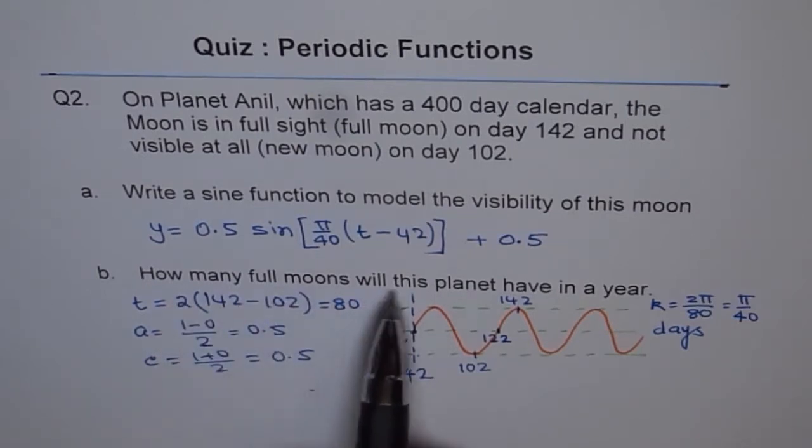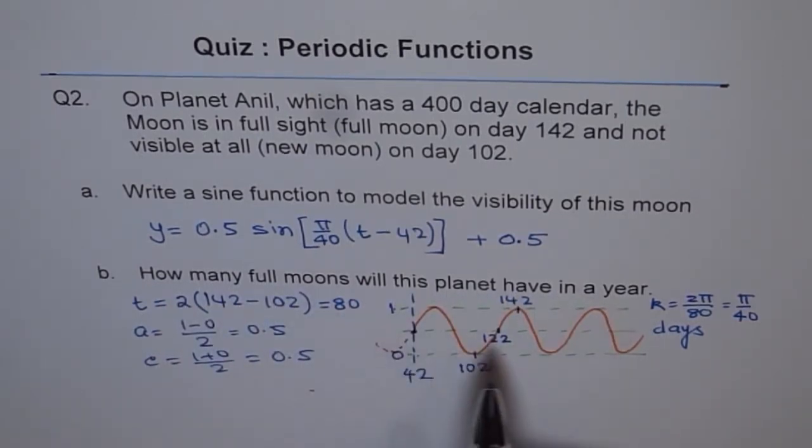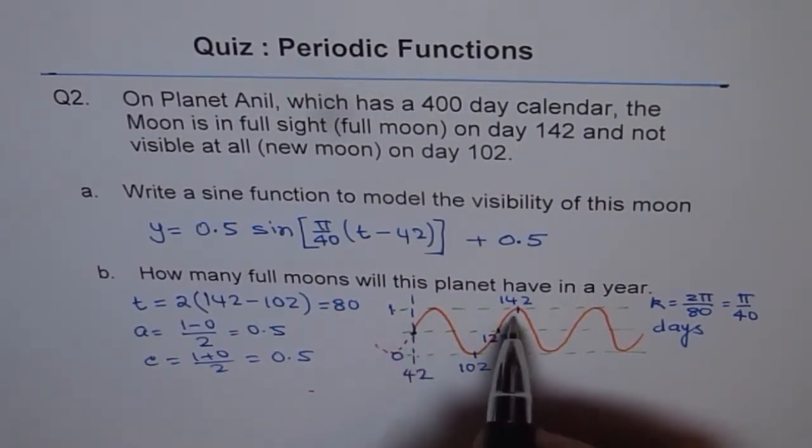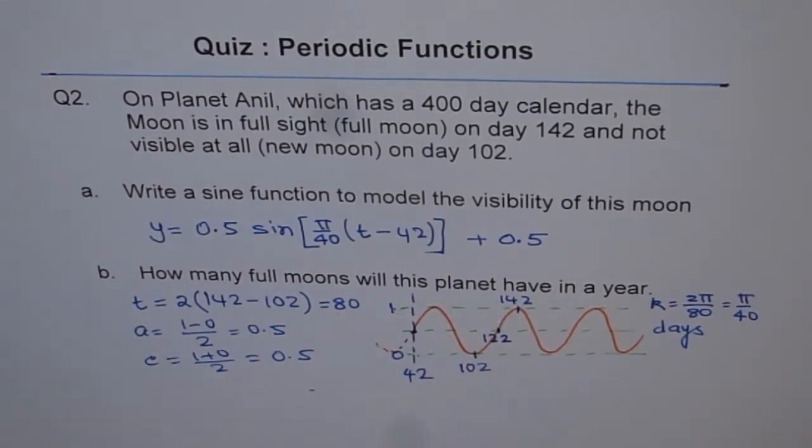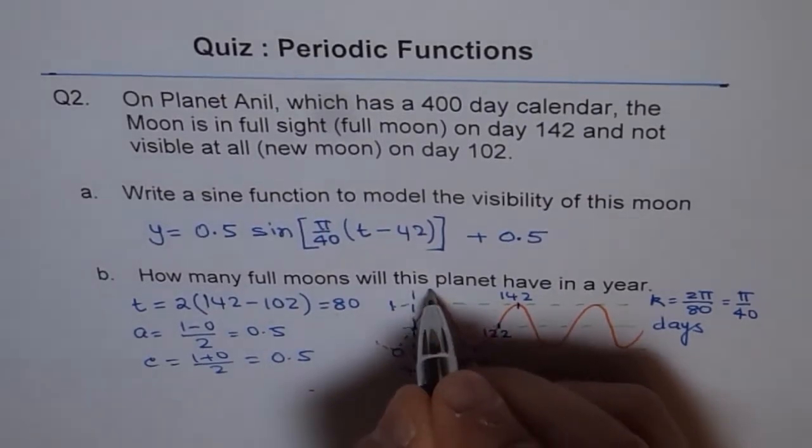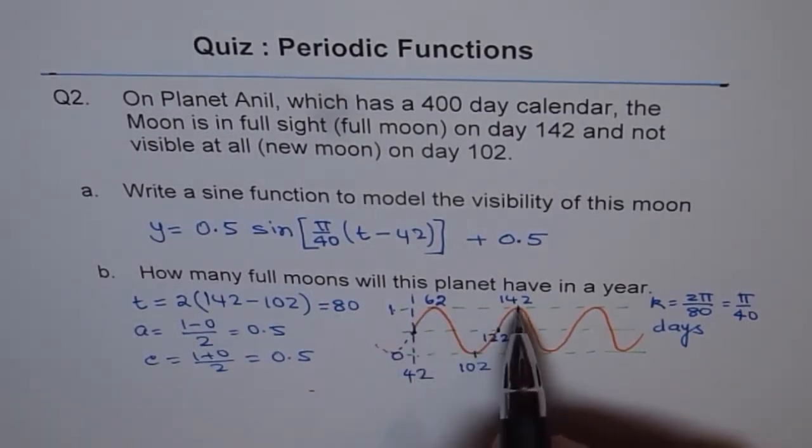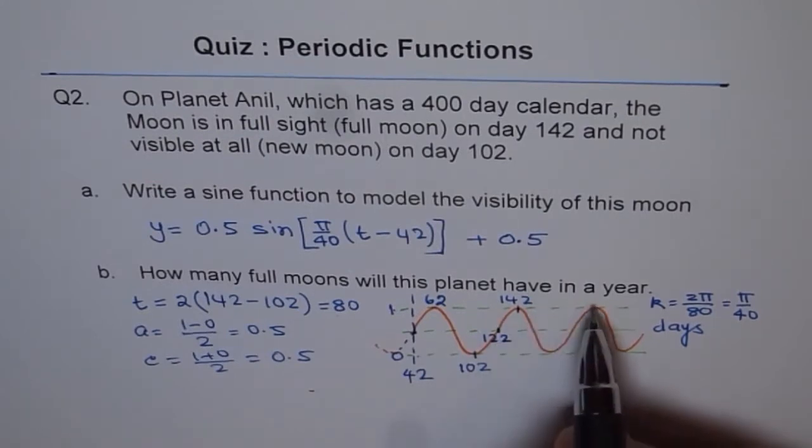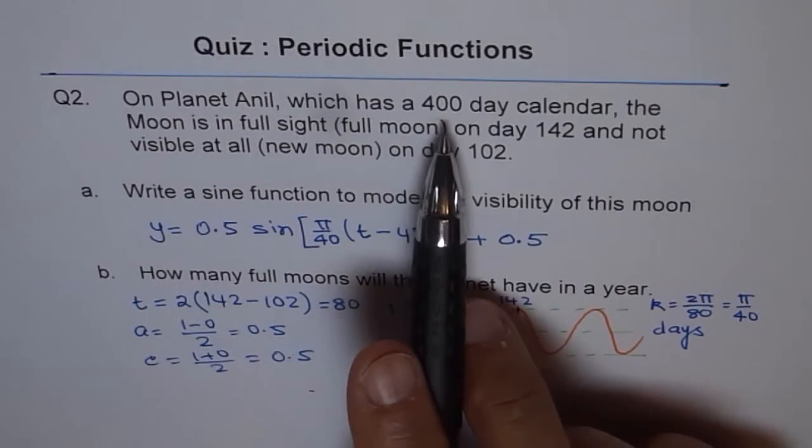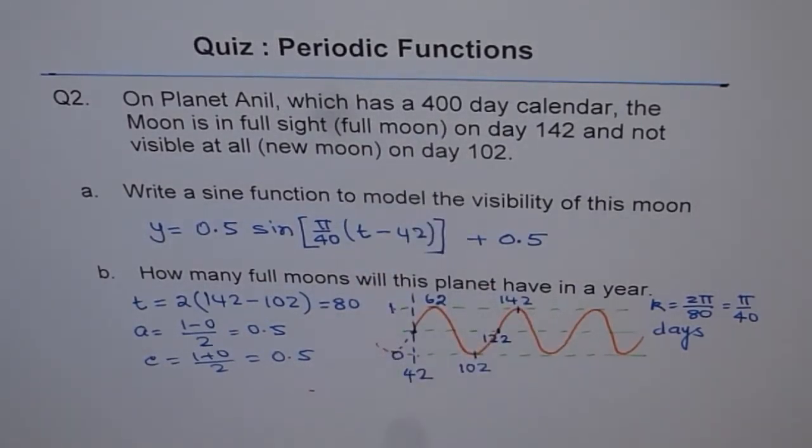B is how many full moons will this planet have in a year. So full moons are the maximum values of 1. So maximum value of 1, first 1 which we have is actually at 20 more than this. Because this was 60 or you could say 80 less than 142. Either way, so you can do 142 minus 80 will give you 62. So the full moon, first full moon is on the 62nd day. And then 142. So keep on adding 80s and see how many 80s can you add to get to 400. So those are the number of full moons.